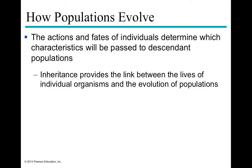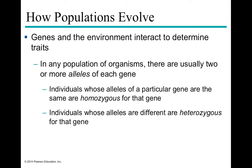The actions and fates of individuals determine what gets passed on to descendants. All of the inheritance patterns an individual has will play a role in that individual's ability to survive and reproduce. Individuals with increased survival and reproduction — increased reproductive success — pass their genes on to the next generation at a higher frequency. That's called inheritance. Inheritance provides the link between the lives of individual organisms and the evolution of populations.